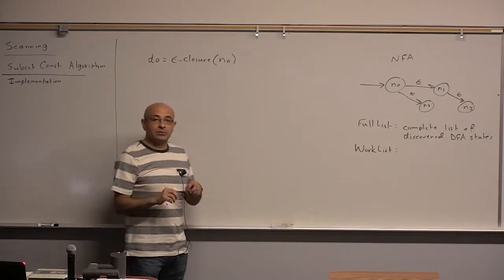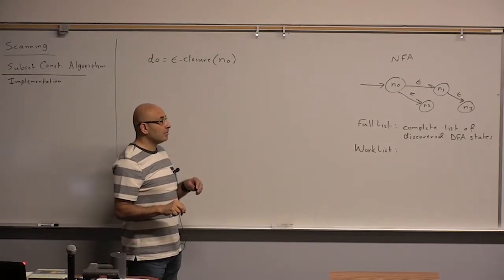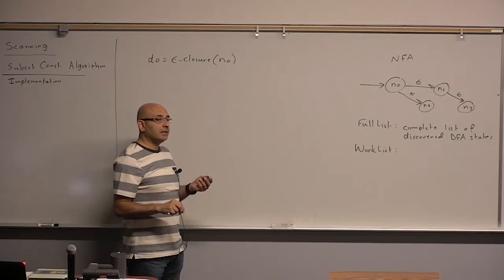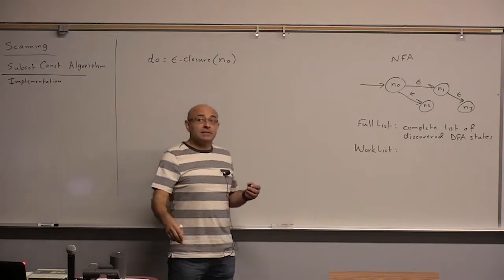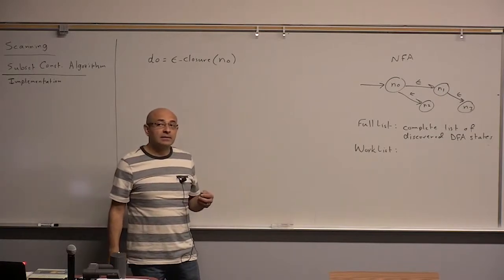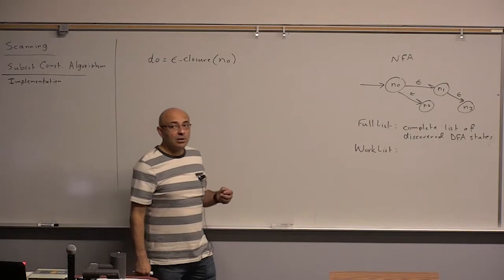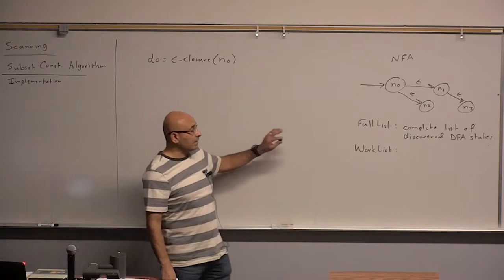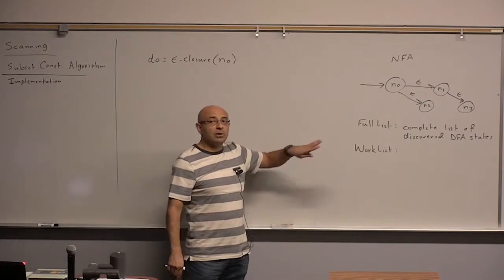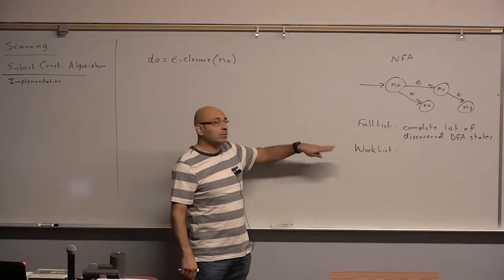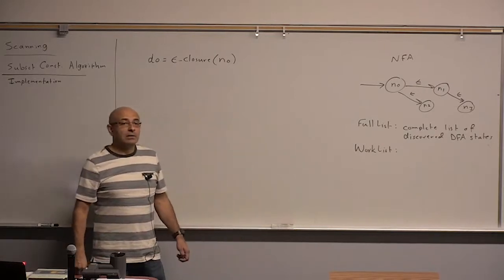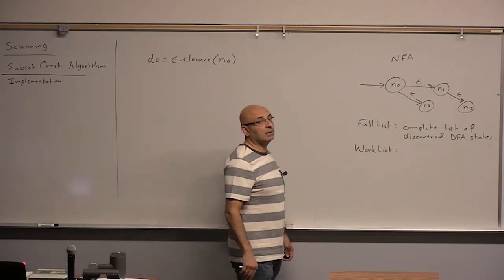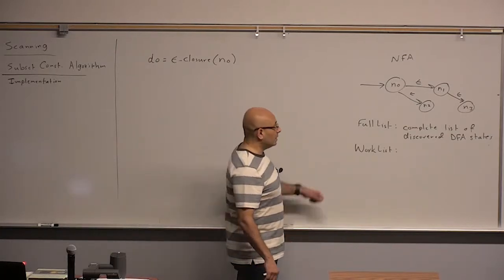And we have the work list. What do you think the work list would be? Why do we need a work list and a full list? So we keep discovering states. The work list would be states that are reachable, like the situation where we had that one state that only went out but not went in. Well, all states are reachable. The algorithm would only see reachable states. Unreachable states will not be seen at all.